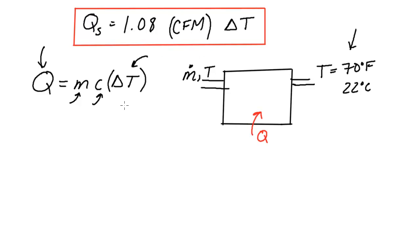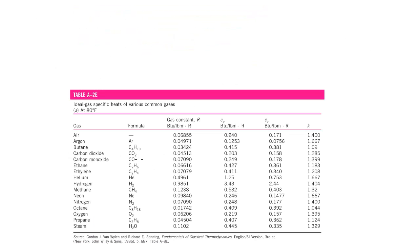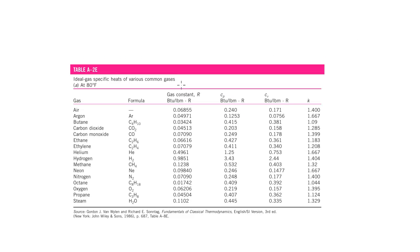So an important item to note is for air, air has a CP of around 0.24 BTU per pound per degree Fahrenheit. And just to prove this to you, I have a sheet here from my textbook. This is ideal gas specific heats of various common gases at 80 degrees Fahrenheit. If I look at air, I can circle this here.